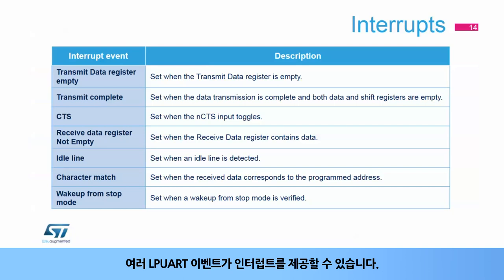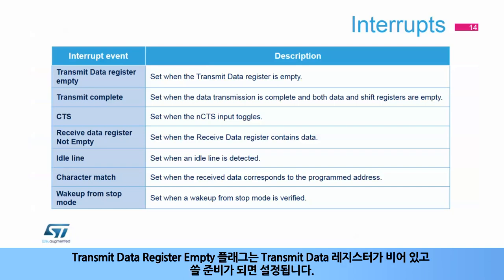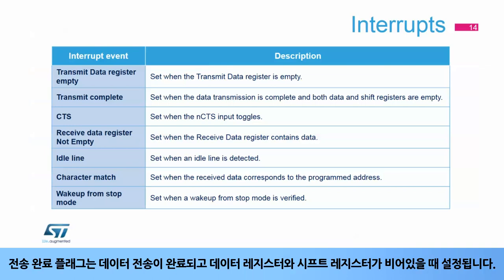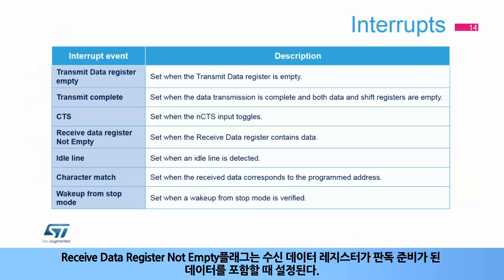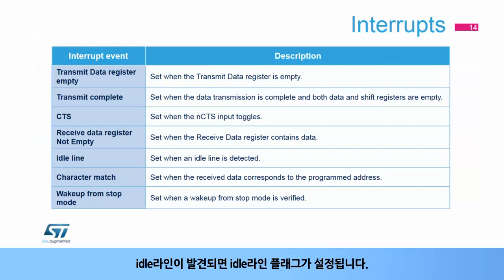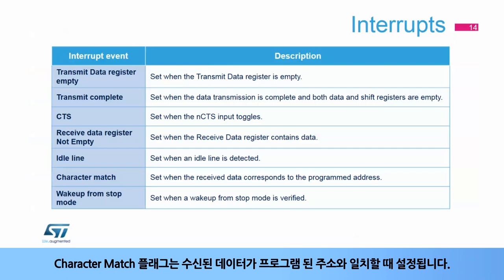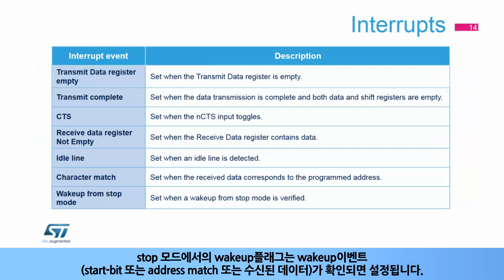Several LPUART events can provide an interrupt. The transmit data register empty flag is set when the transmit data register is empty and ready to be written. The transmit complete flag is set when data transmission is complete and both data register and shift register are empty. The CTS flag is set when the NCTS input toggles. The received data register not empty flag is set when the received data register contains data ready to be read. The idle line flag is set when an idle line is detected. The character match flag is set when the received data corresponds to the programmed address. The wake-up from stop mode flag is set when the wake-up event — start bit, address match, or any received data — is verified.